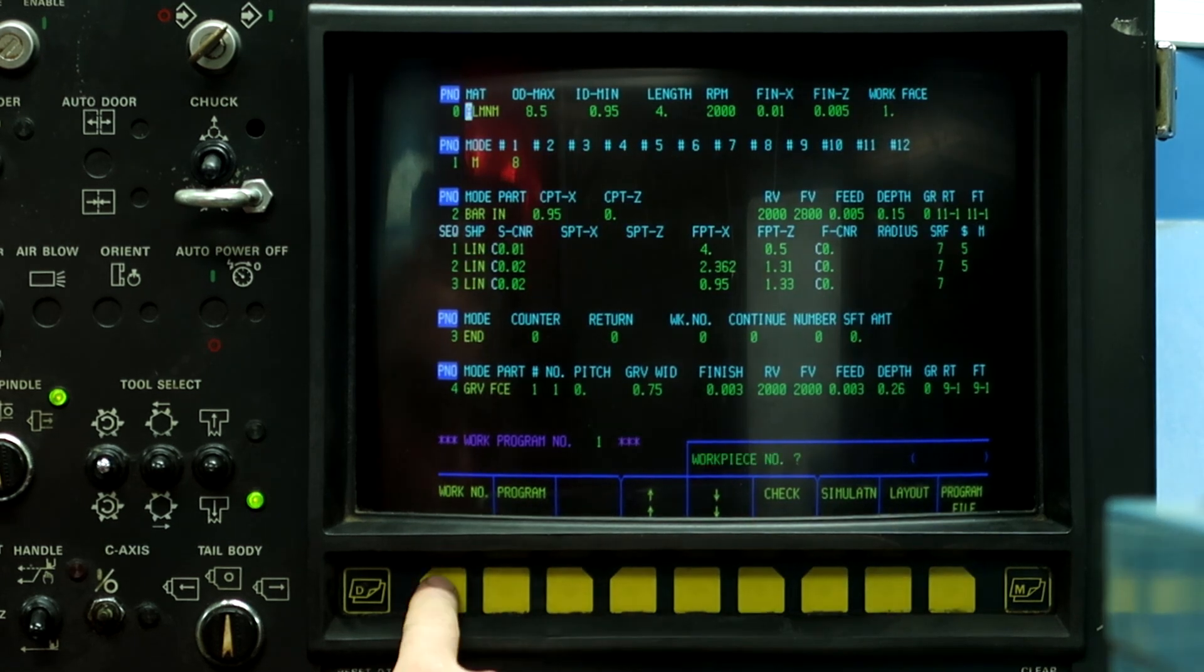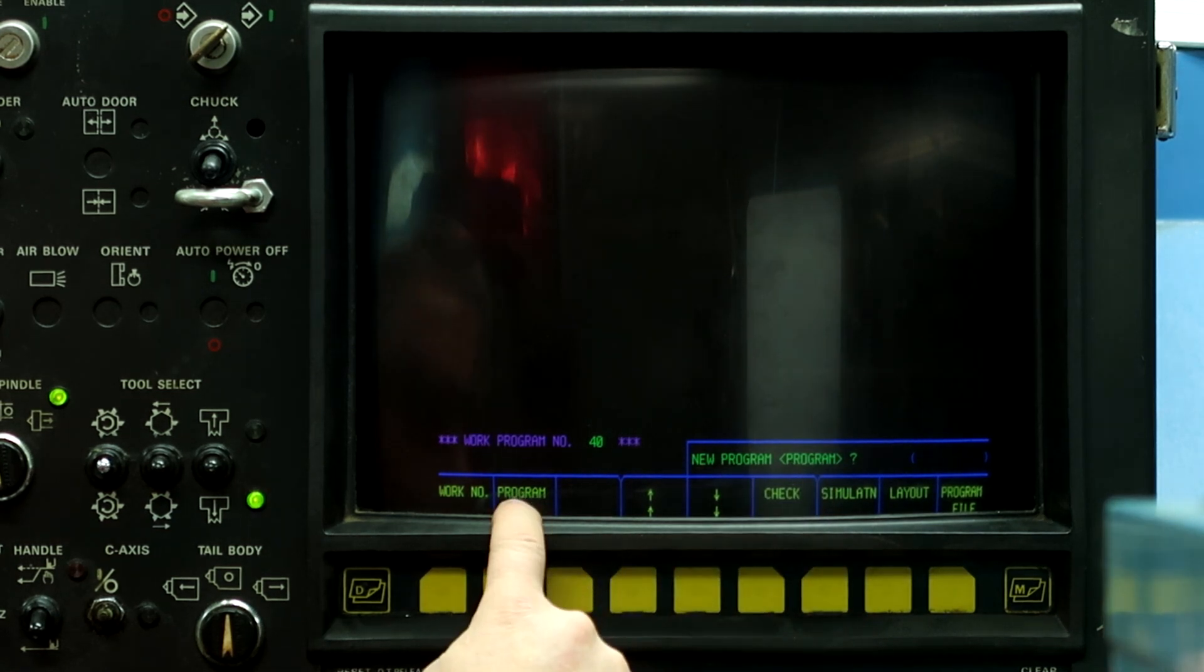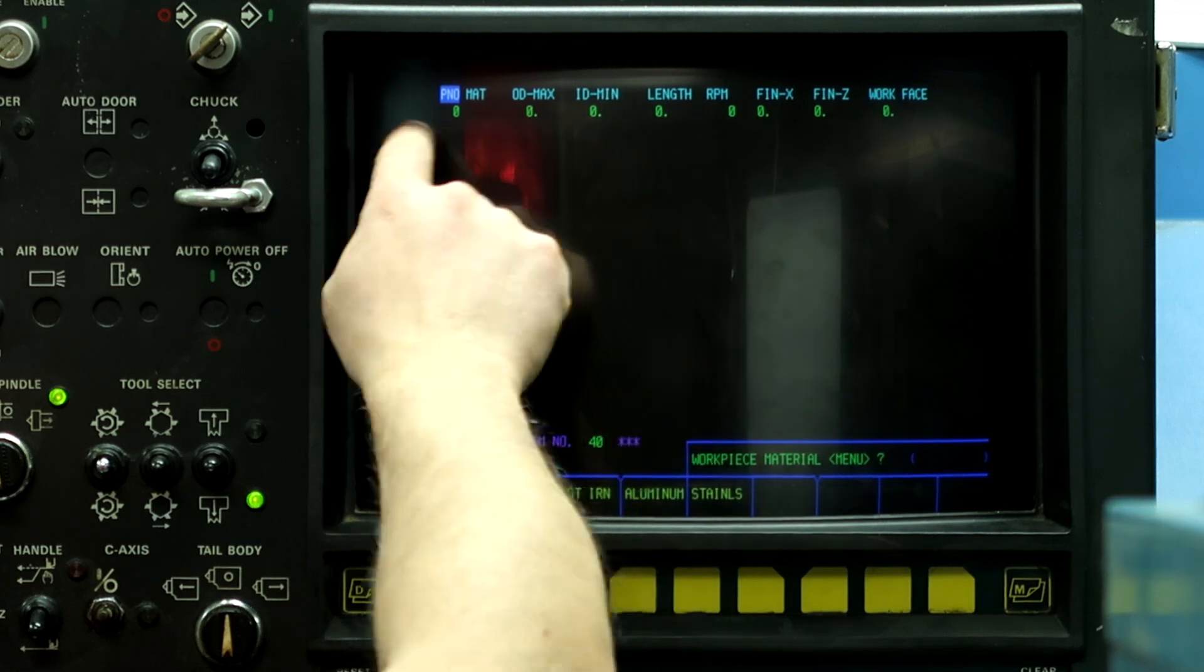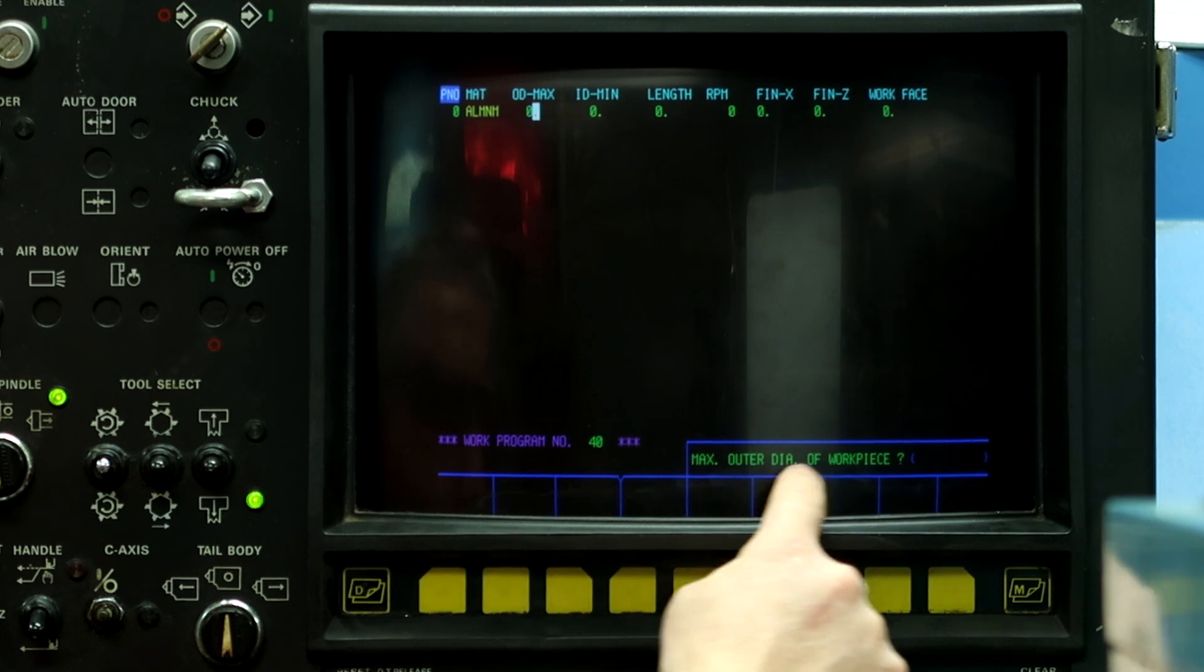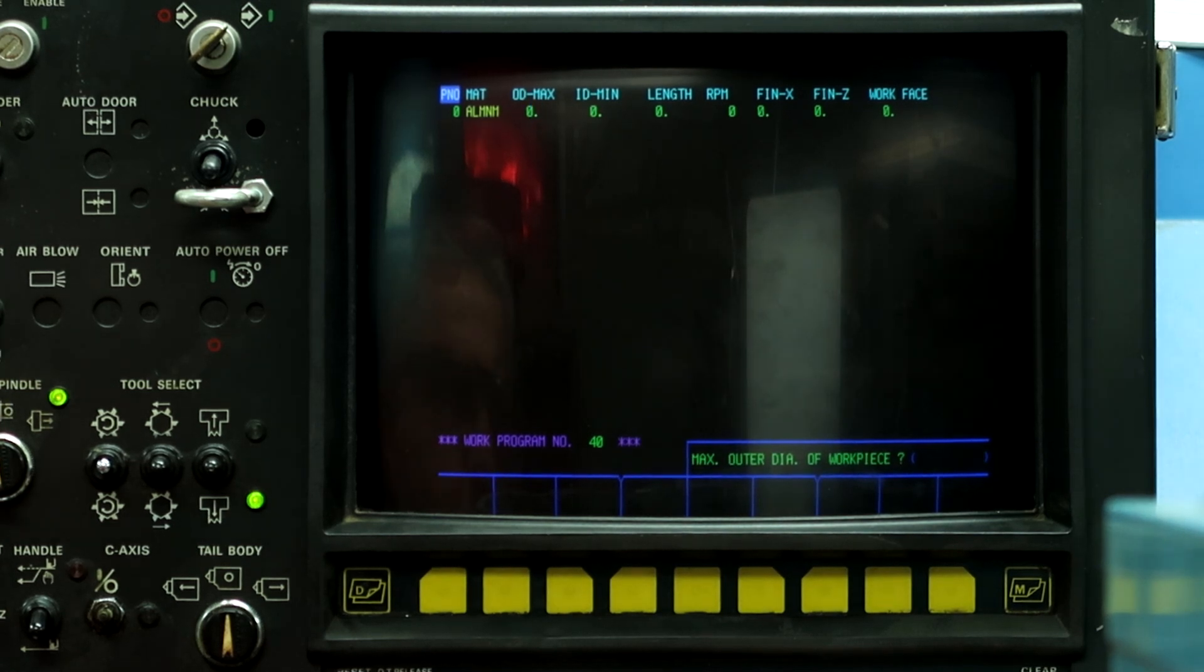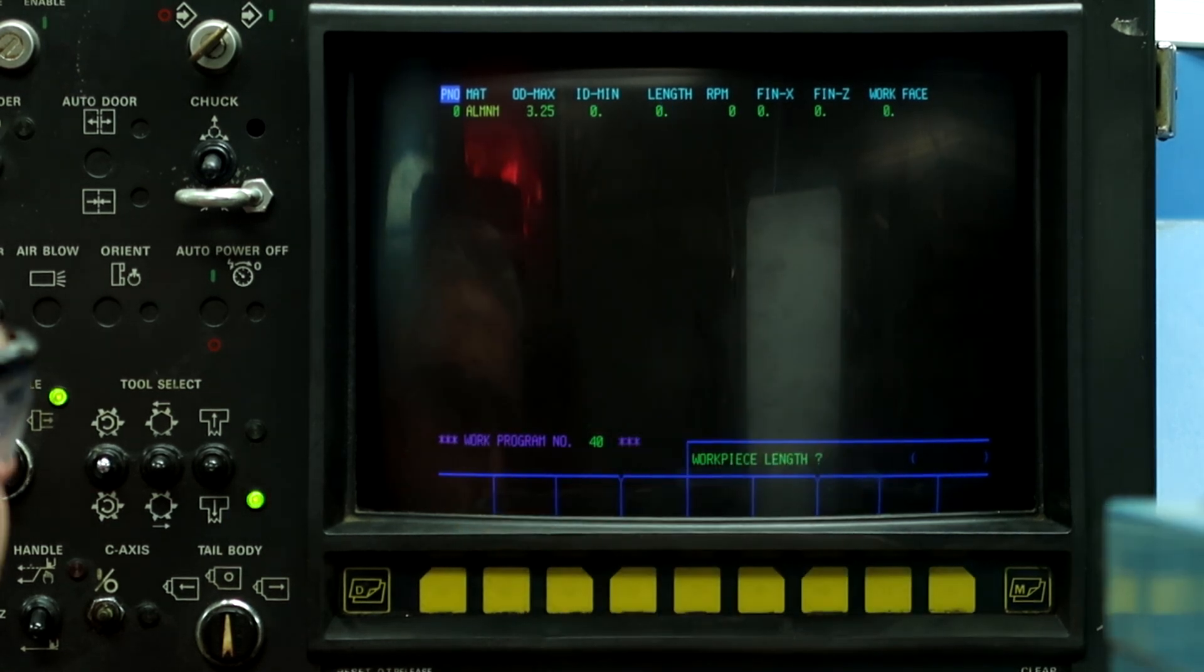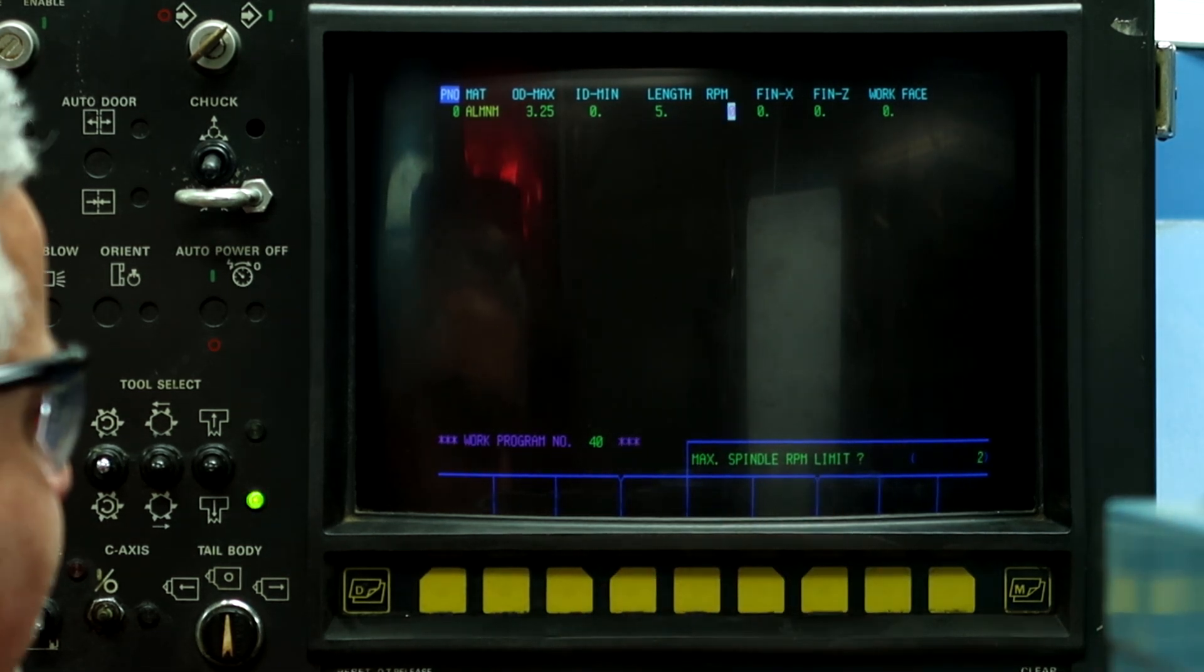Go back to Program, type work number 40, input. If it's a new program, push the program button. Mazatrol or EIA, we're going with Mazatrol. So the top line is going to be the same as what we normally do. Work piece material is aluminum. Max outside diameter, again we're starting with 3.25 stock. Inner diameter does not have a hole in it. The work piece length I'm going to say is five inches long. The max spindle RPM limit is 2,000 RPM.